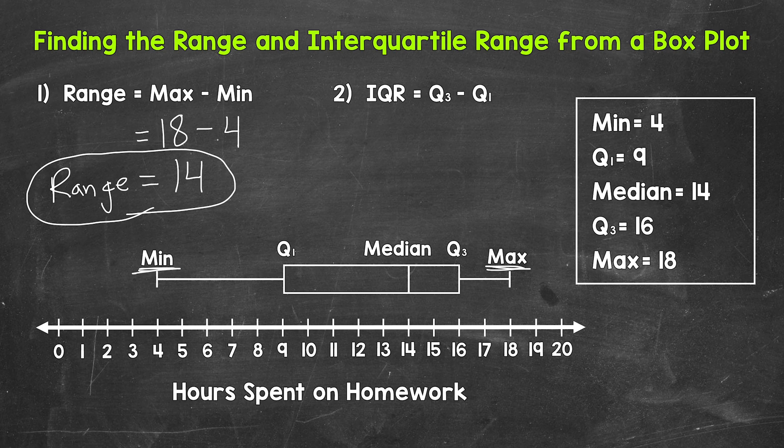We find the interquartile range by finding the difference between the third quartile and the first quartile. The third quartile is 16 minus the first quartile, which is 9. The third quartile is right here, and then the first quartile is right here. 16 minus 9 is 7. So the IQR, the interquartile range, is 7.